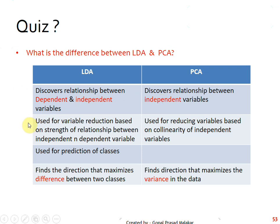LDA tries to do variable reduction based on the strength of relationship between independent and dependent variables. Even if you are using Fisher's ratio, it is all about finding those variables which have more discriminatory power.